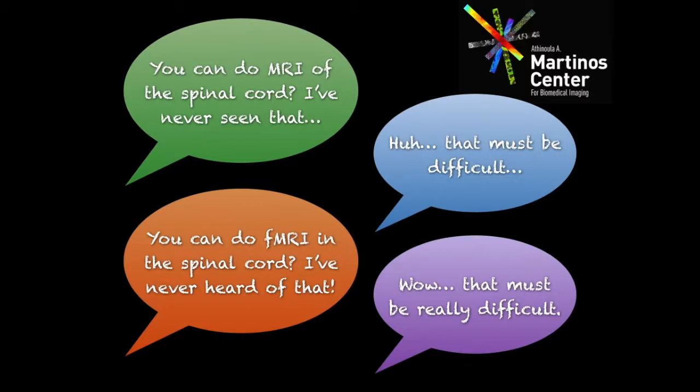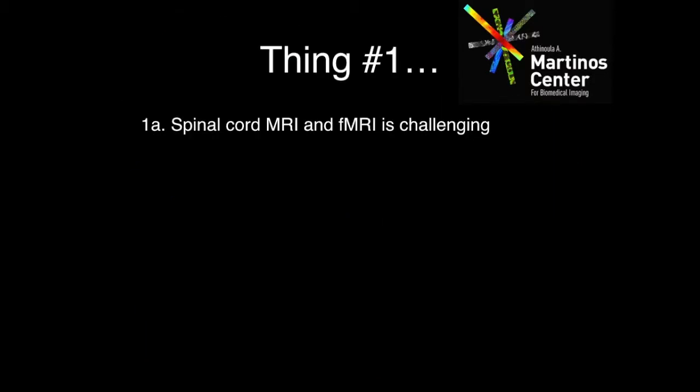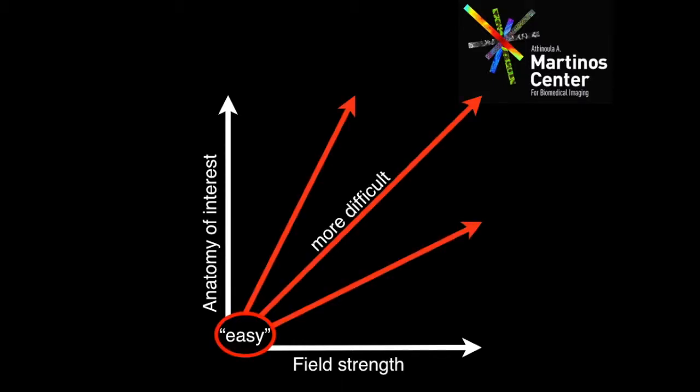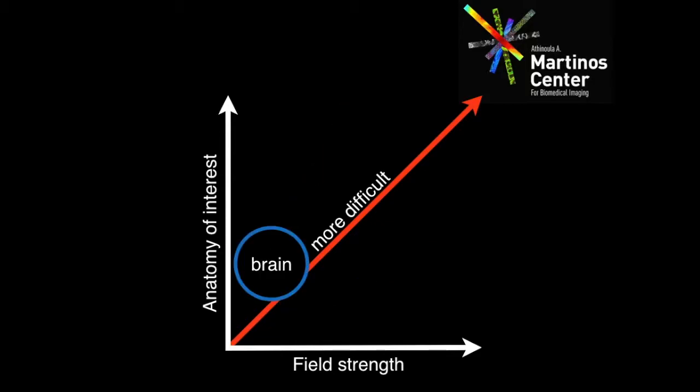Thing number one: I want to convey that spinal cord MRI and fMRI is really quite challenging. If I prepare a cartoon plot with anatomy of interest on the y-axis and field strength on the x-axis, stuff that is easy to do is near the origin. We can put brain imaging here — we do it every day, we know how to do it. And spinal cord imaging is further up this axis and much more difficult to do.